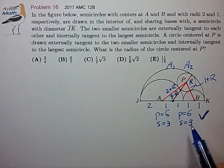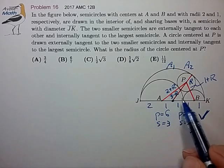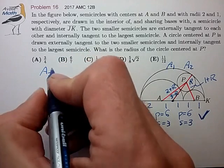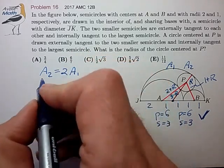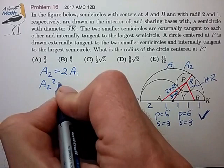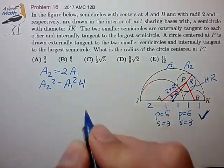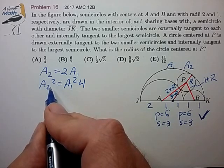So let's use Heron's formula to relate the areas of these two triangles. We know that a2 is equal to 2 times a1. So a2 squared is a1 squared times 4. Now let's plug in Heron's formula.